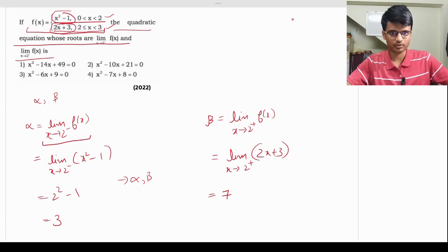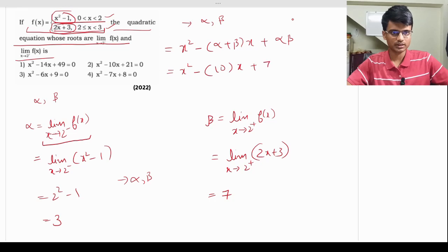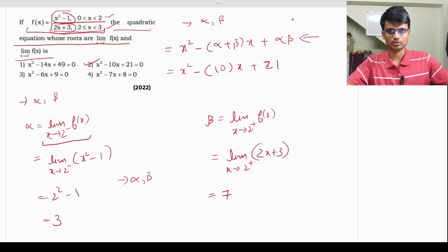Using these roots, the quadratic equation is x² - (sum of roots)x + (product of roots) = 0. Sum = 3 + 7 = 10, product = 3 × 7 = 21. So the equation is x² - 10x + 21 = 0. The correct answer is option B. This was a multi-concept question combining limits and quadratic equations.